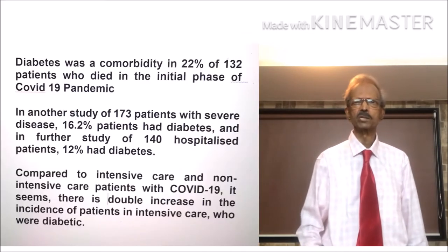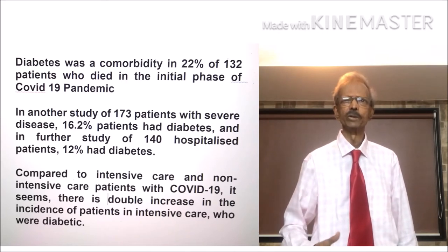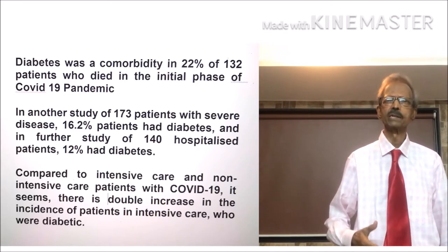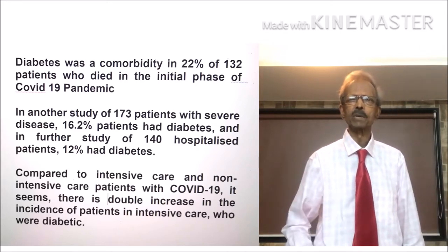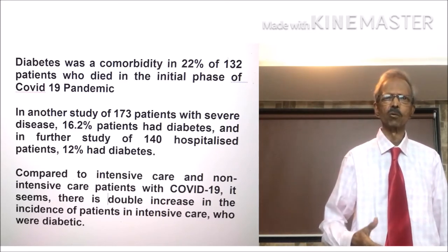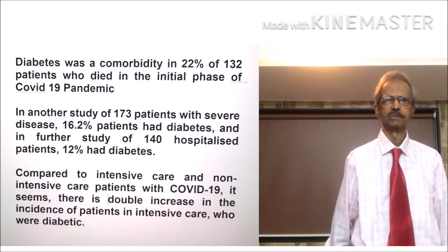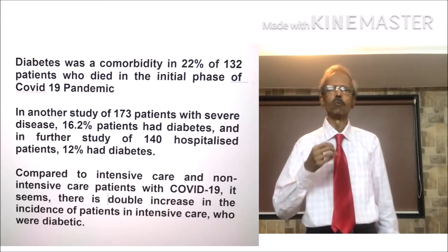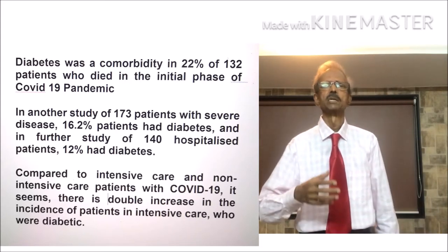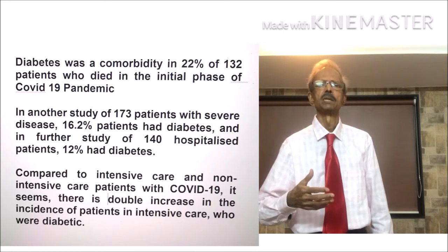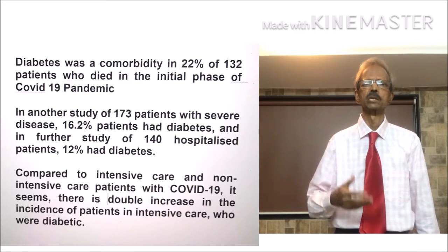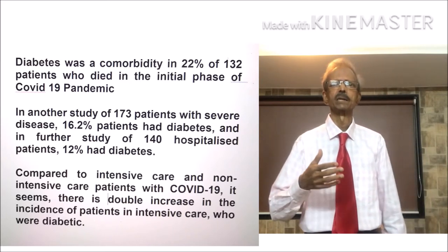Let us consider some cases of COVID-19 who were diabetic during the first phase of the disease. Diabetes was a comorbidity in 20% of 132 patients who died in the initial phase of the COVID-19 pandemic. In another study of 173 patients with severe disease, 16.2% had diabetes, and in a further study of 140 hospitalized patients, 12% of cases had diabetes.